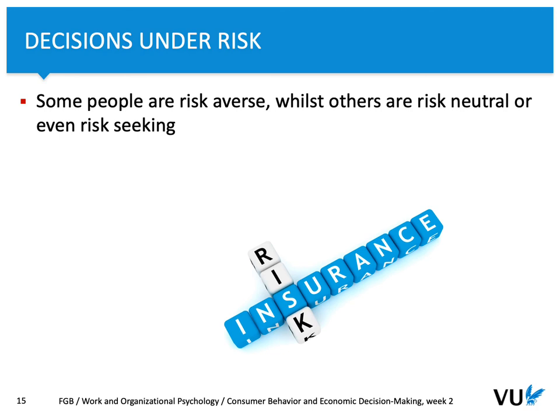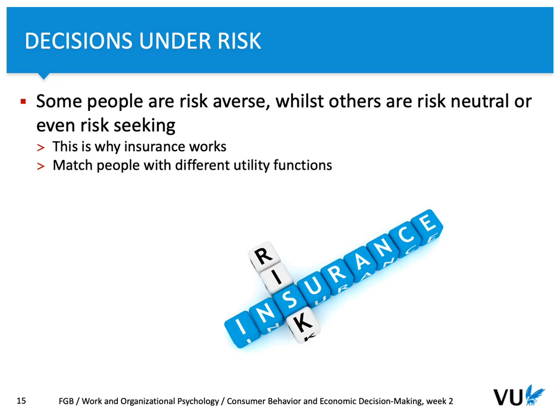What you can do is calculate expected utility. This is why insurance works: because you can turn uncertainty into risk, calculate probabilities to some extent, and then offer different clients different things at different prices. You know that you can match people with different utility functions. I hope that it helped you to understand why and how people make rational decisions.